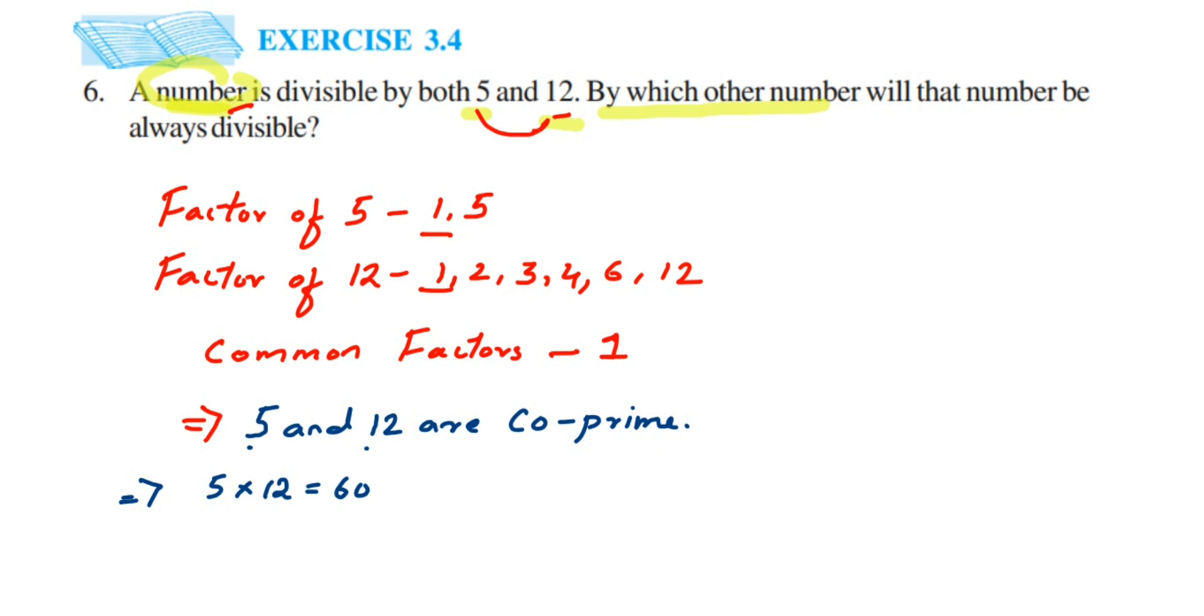5 into 12 is 60—that is the other number by which that number, the number which is given in the question, is divisible. That number will be divisible.